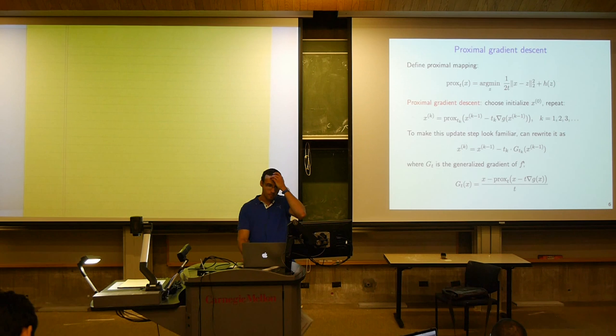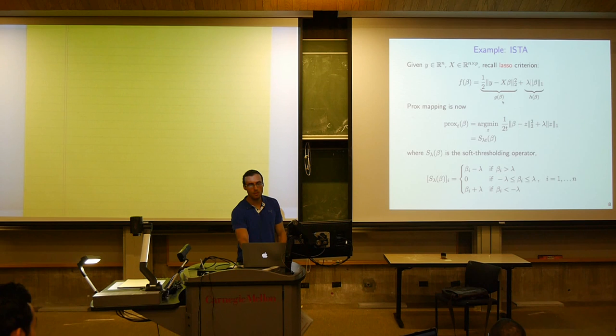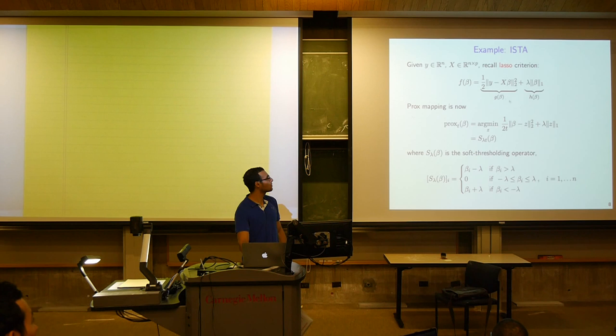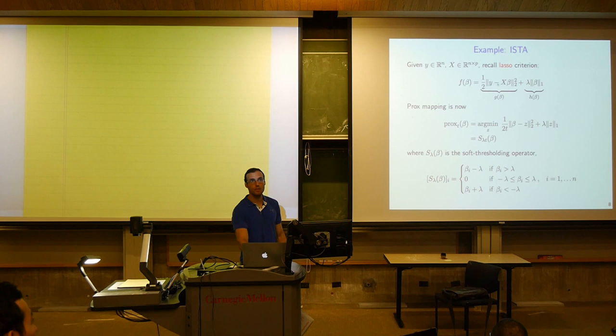For the lasso problem with proximal gradient descent, this algorithm is not specific to having a least squares loss — it also works with a logistic loss or any smooth convex loss. All that changes is essentially the gradient. As long as you can calculate the gradient of the smooth part efficiently, the computational complexity of the algorithm doesn't really change.